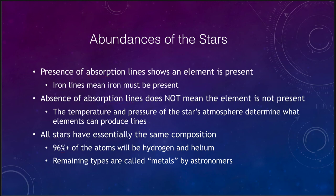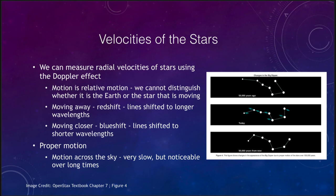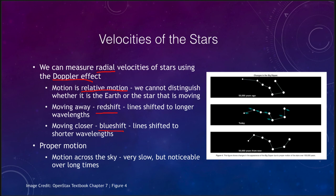We can also measure the velocities of stars. We use the Doppler effect to measure the radial velocity of stars, but note that this is relative motion — we cannot tell whether it's the Earth or the star that is moving. If we are moving away from each other, that gives us a red shift; the lines are shifted toward longer wavelengths. If they are moving closer together, we get a blue shift, with lines shifted to shorter wavelengths.